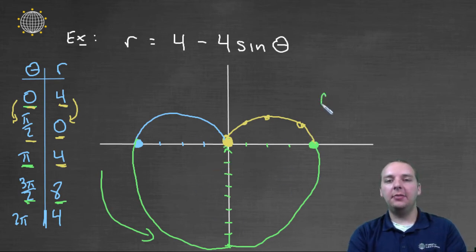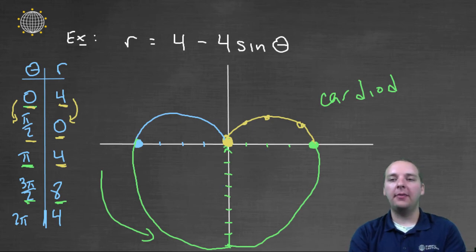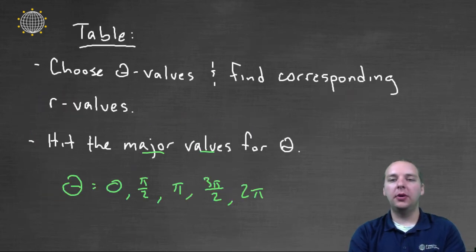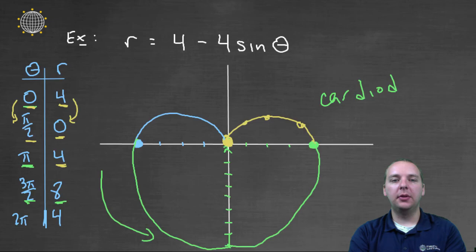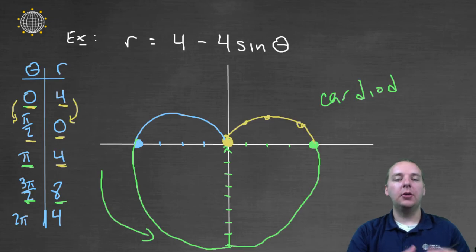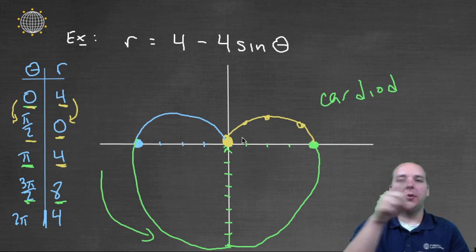This guy has a name. This is called a cardioid. For obvious reasons, it looks like a heart-shaped graph, and this is a very popular polar graph. Here I even did one earlier on the calculator. This was a different cardioid graph, but it was something similar to ours. So again, you pick some thetas, you find the R values that go with them, you plot these points, and then you sketch out the curve as you fan around from zero to two pi.